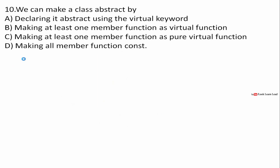We can make a class abstract by having at least one pure virtual function. A pure virtual function is a function without a function body. If you have doubts about pure virtual functions and abstract classes, there is a separate video available. So the answer is C: making at least one member function a pure virtual function makes a class abstract.